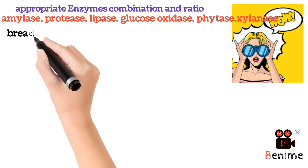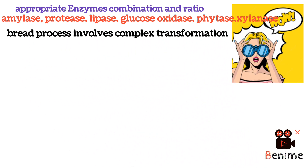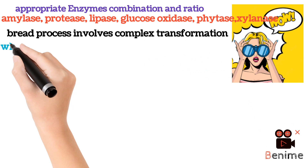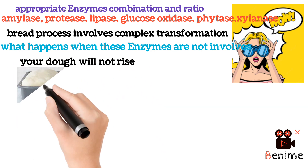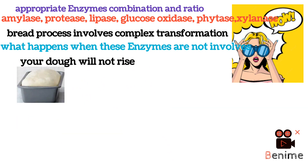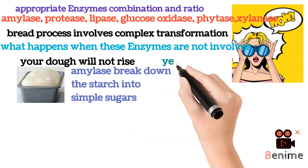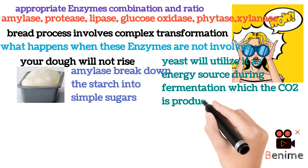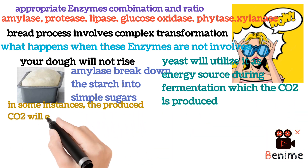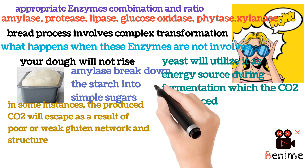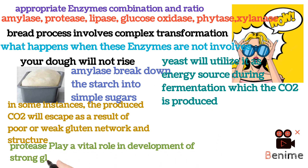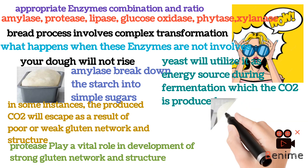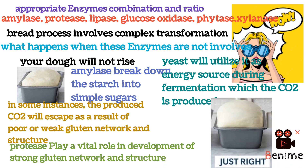Complex transformations are involved in the bread-making process. To understand the role and importance of these enzymes fully, let's ask: what will happen if these enzymes are not applied? The dough will not rise. Amylase breaks down starch into simple sugars, which are used by yeast to produce CO2 gas. This gas is trapped by the gluten structure. However, in some situations, CO2 will escape due to a poor and weak gluten network. Protease helps develop a strong gluten network, ensuring CO2 is trapped completely, so the bread shape is formed and volume is increased.